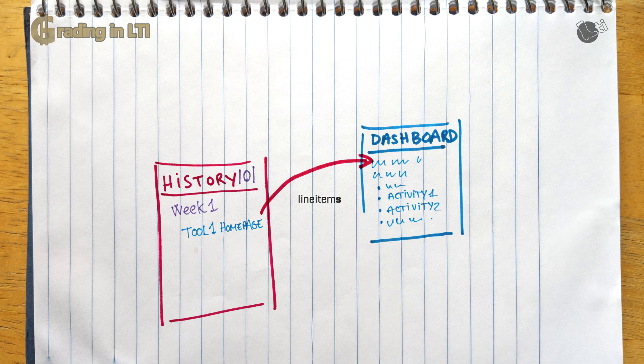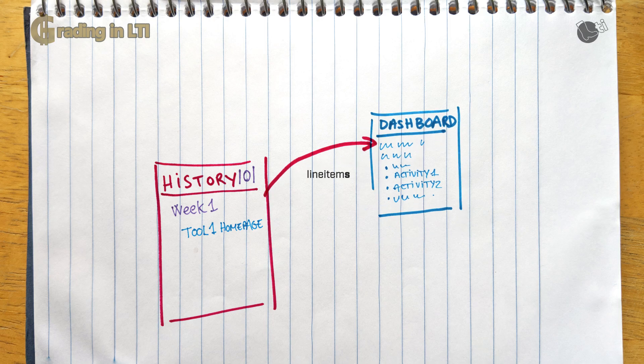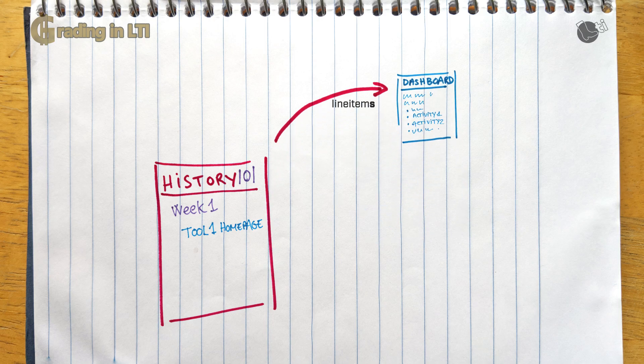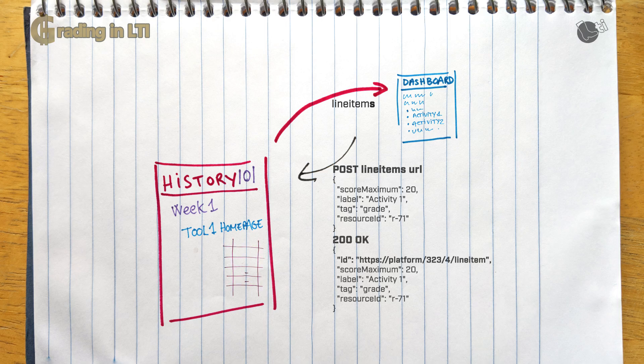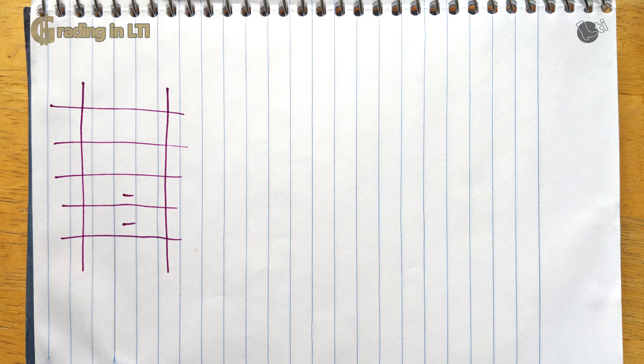Now, maybe you actually want a single link to the tool in your course, just a link to the tool homepage, but you still want to report grades for the embedded activities. This is where the second way to create line items becomes useful. You can create line items programmatically by posting a new line item definition to the line items URL. If the platform accepts your request, a new line item will be created and its URL will be returned to you and now you can use it to post grades to the LMS.